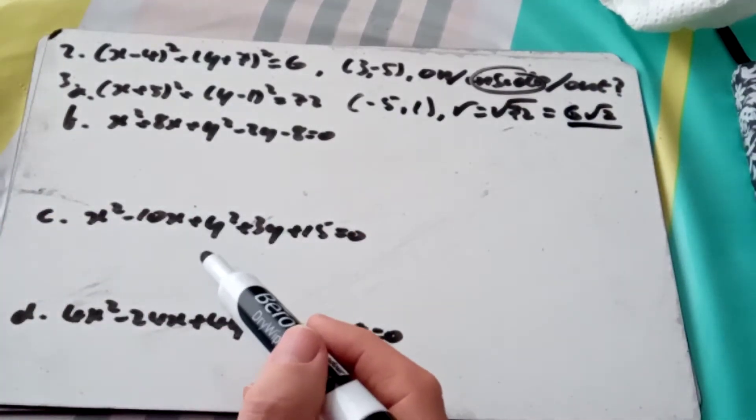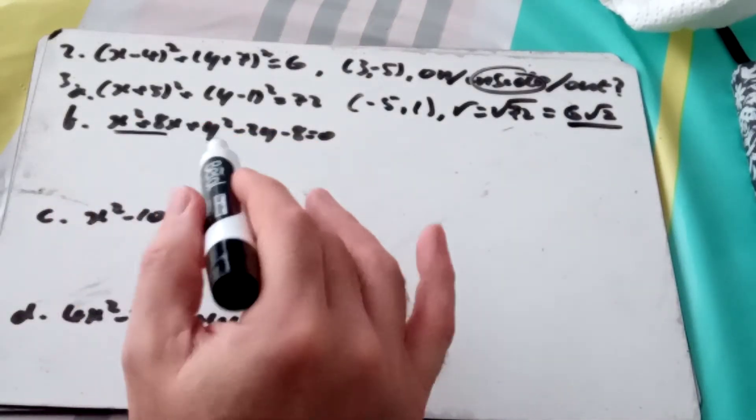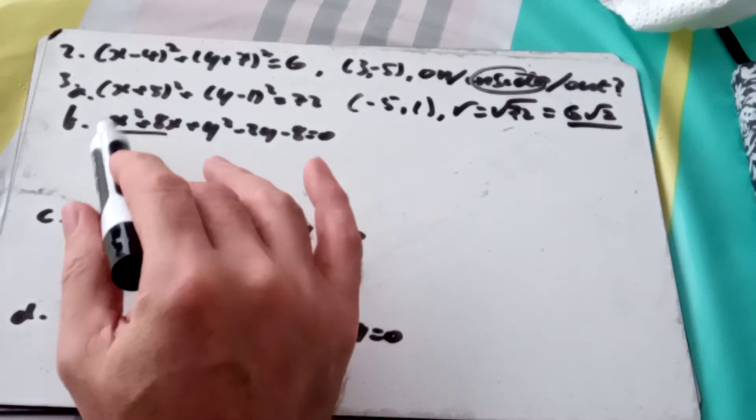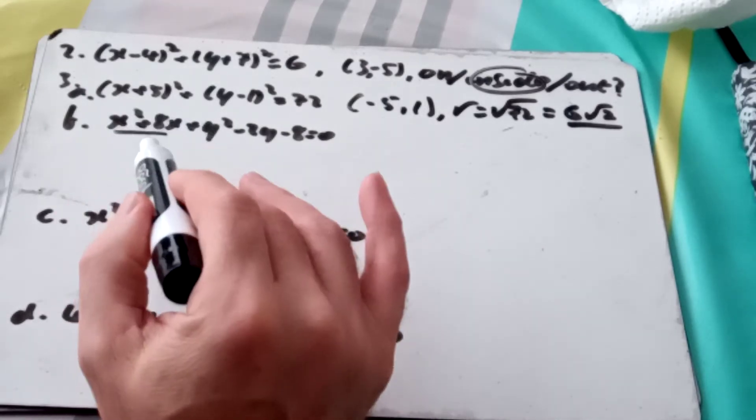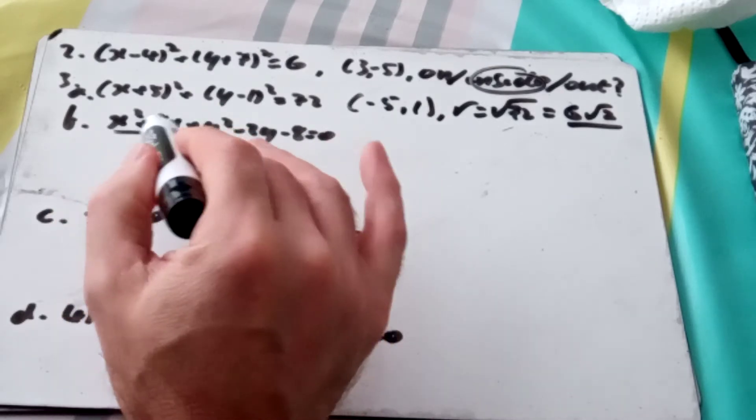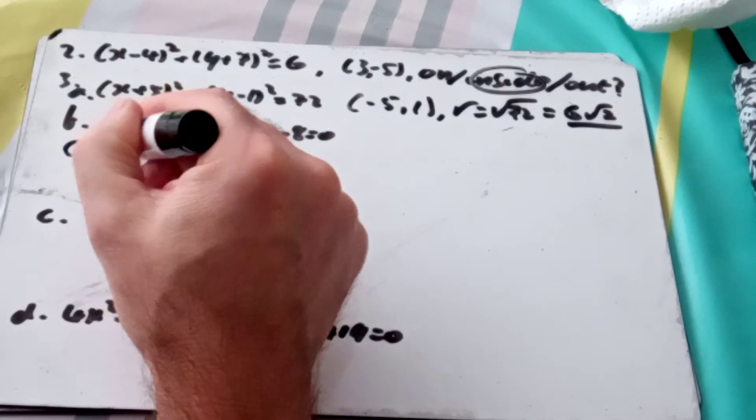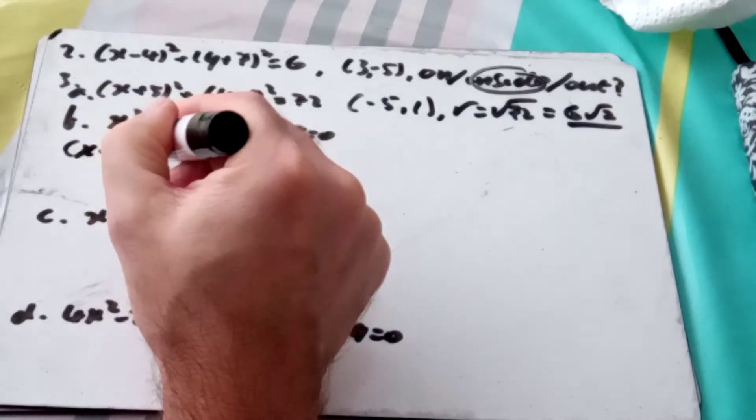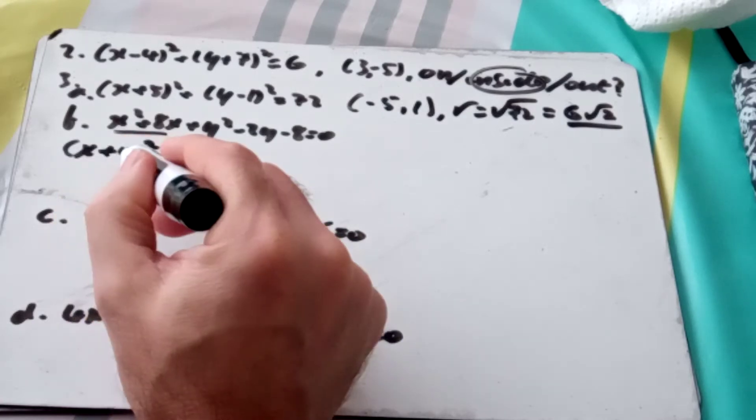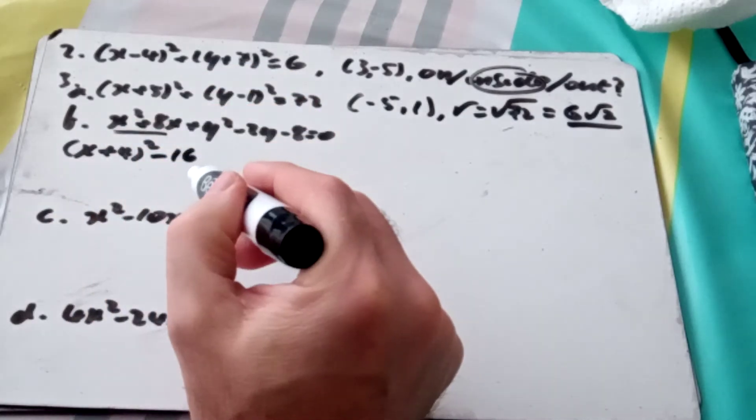But they can also give us this form here. And what I have to do with this form is do a bit of completing the square for each part of it. I know I'm going to have the equation of a circle as long as I've got the same coefficient of x squared and y squared. So in this case, I've got 1x², 1y², so it's going to be the equation of a circle. So x² + 8x, I need to halve the x coefficient to get +4, and that would have given me x² + 8x + 16. I need to balance it by minusing the 16.